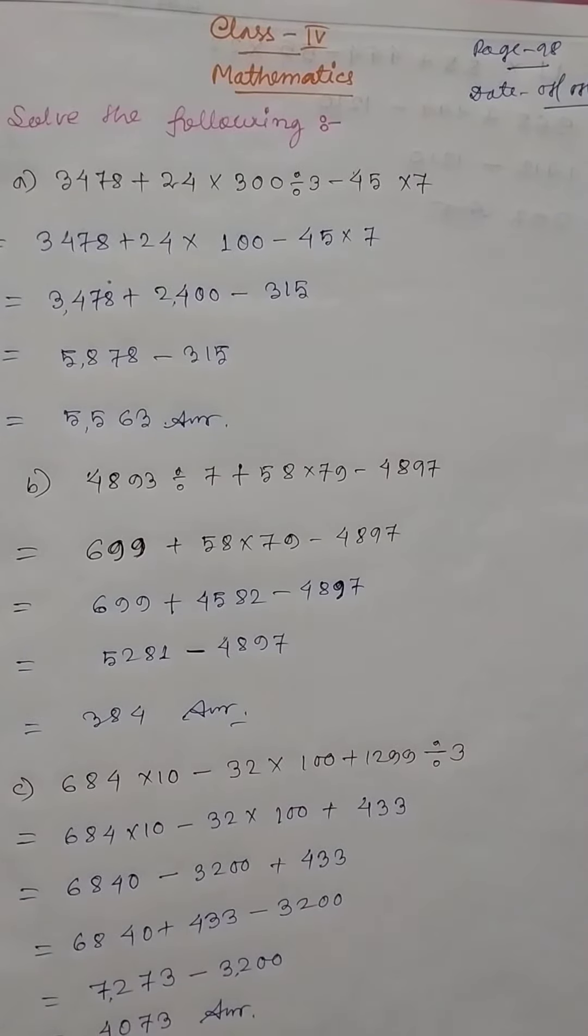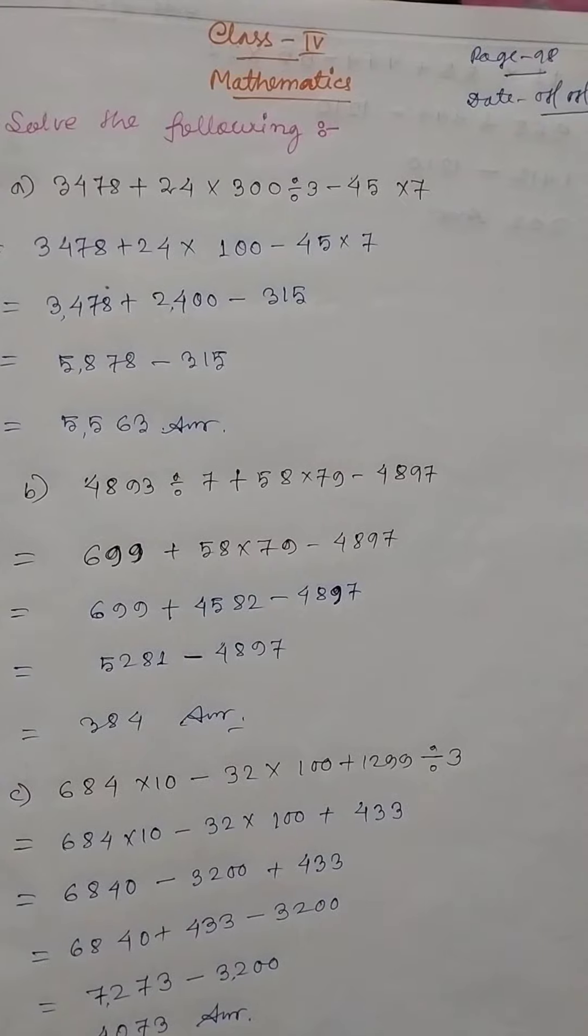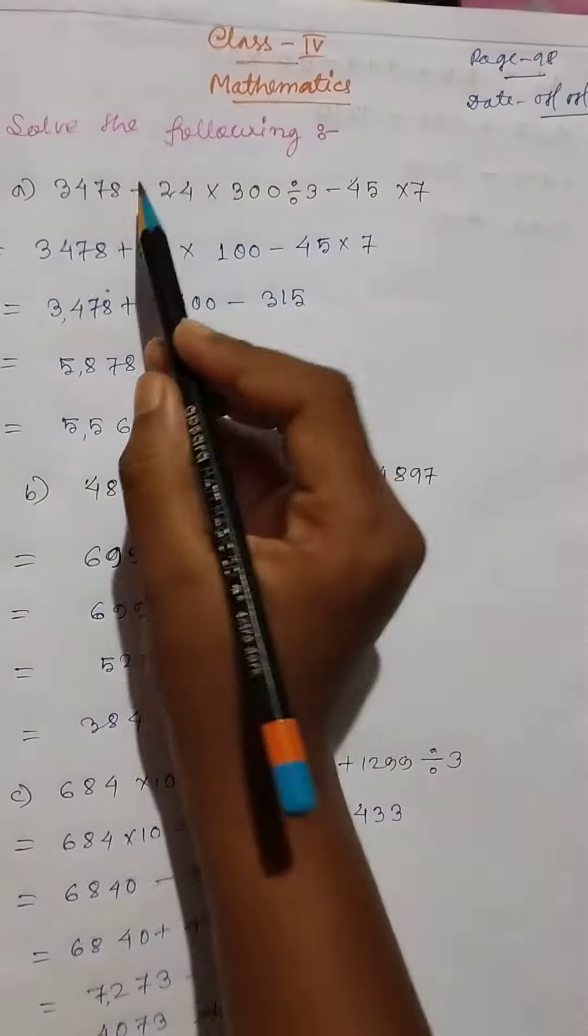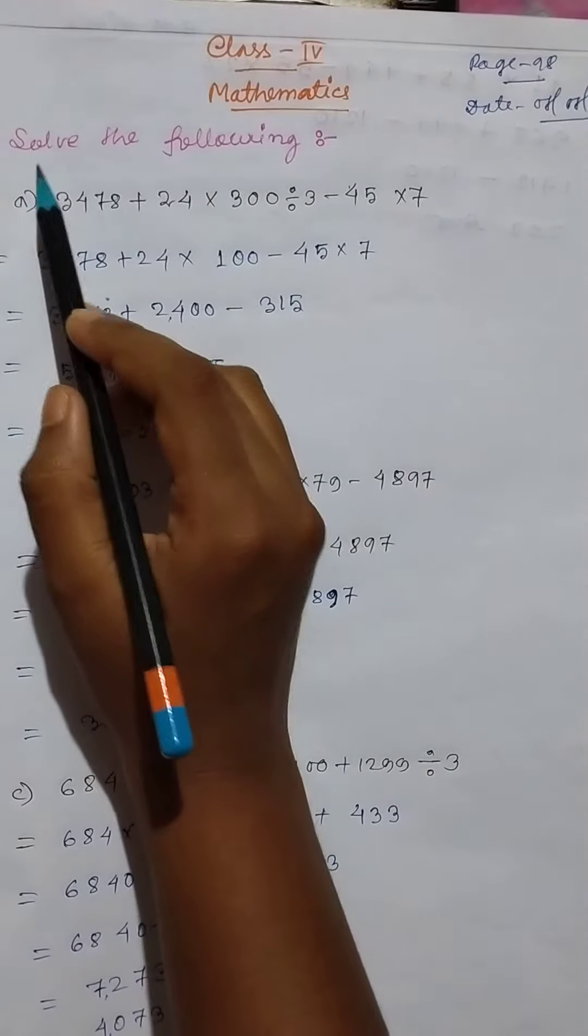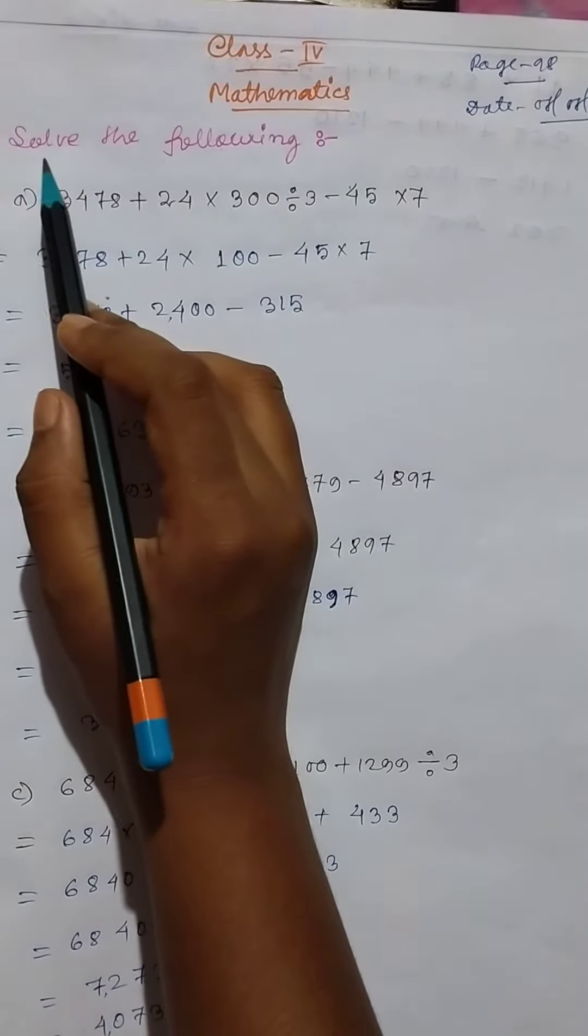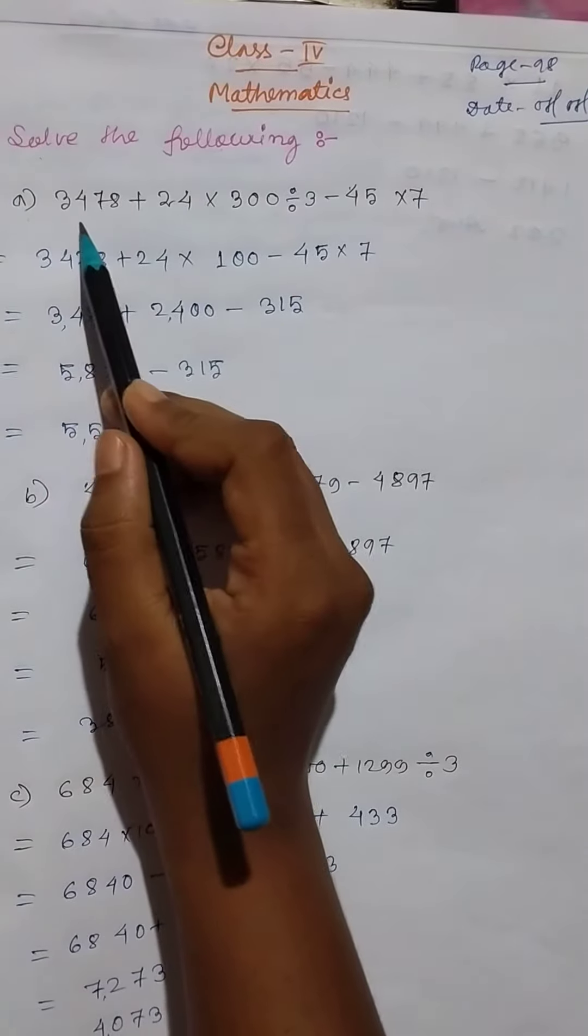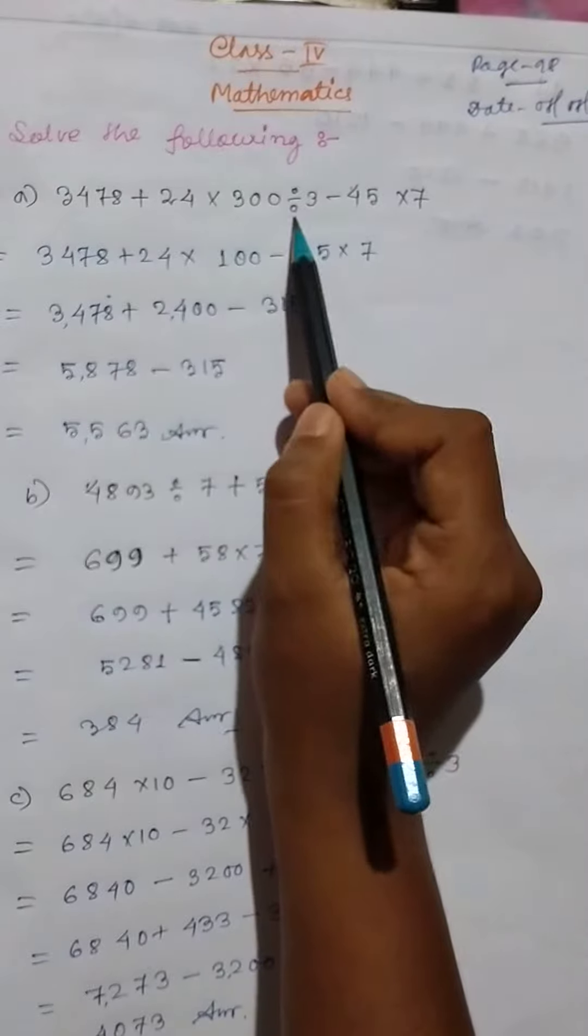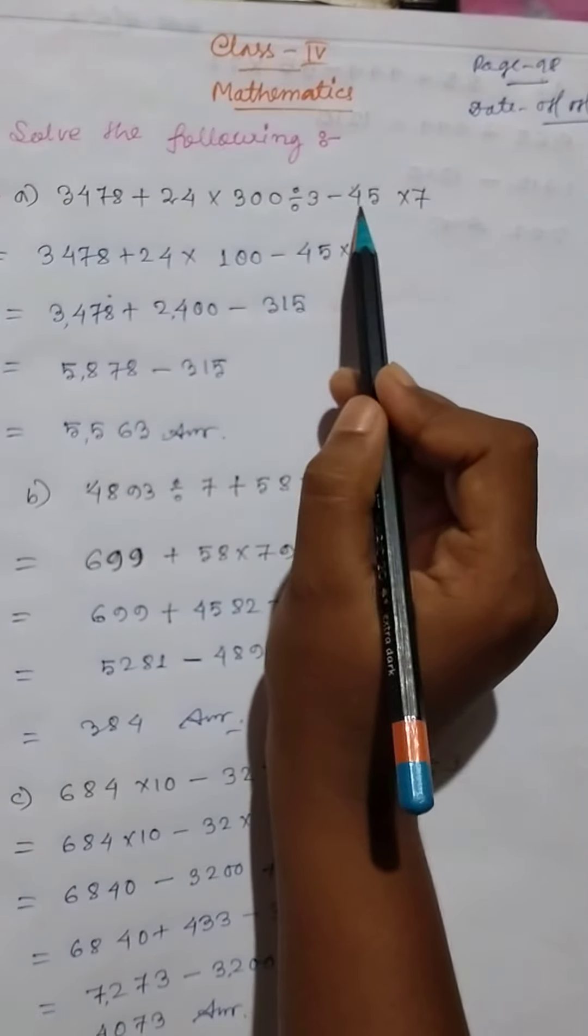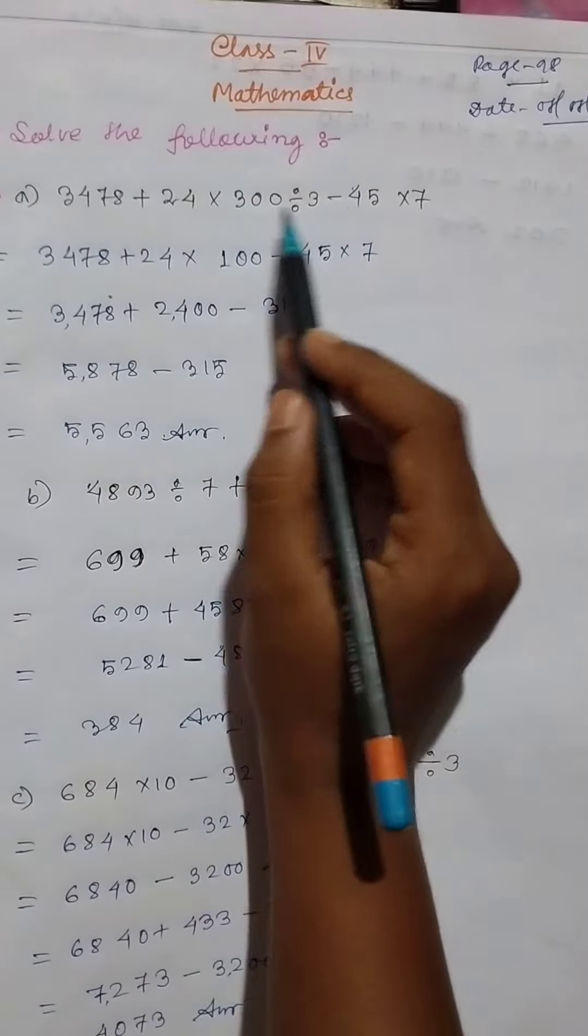Good morning class for mathematics, date 7th of July 2020, page 98. So students, look at this. Solve the following. Today we will solve the following. So firstly, 3478 plus 24 into 300 divided by 3 minus 45 into 7.